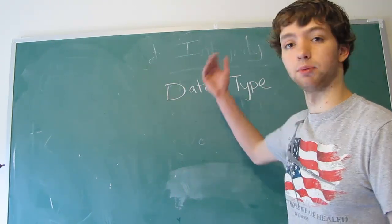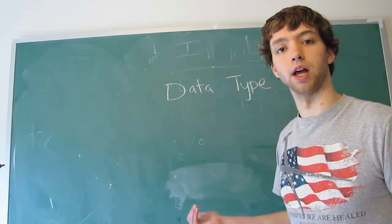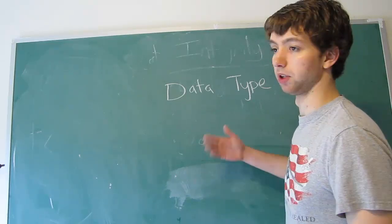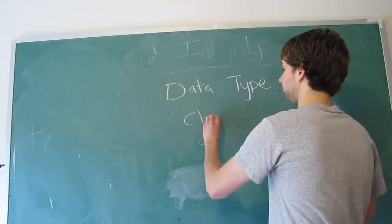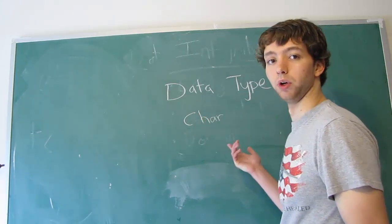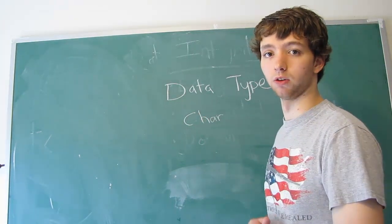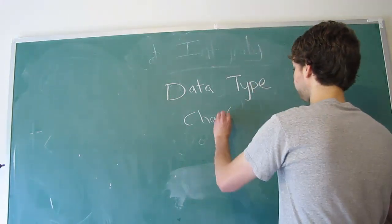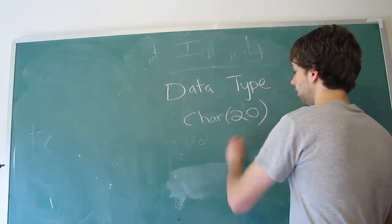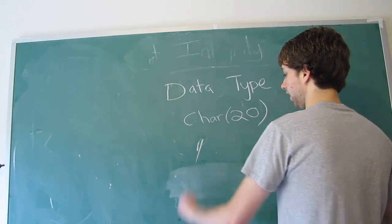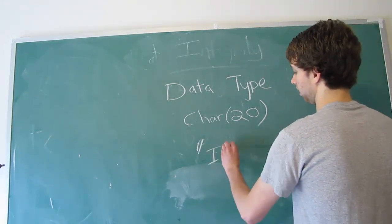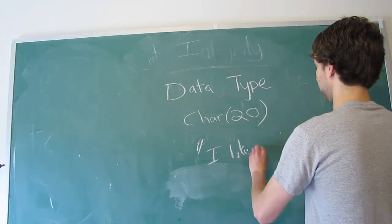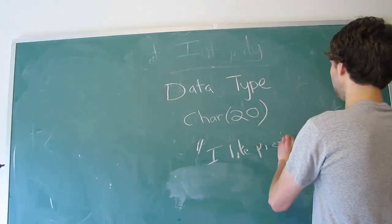A data type is pretty self-explanatory. It's the type of data. In databases, we classify things as generally integer or text or date. So we either have numbers, text, or dates. That's like three general categories, which we'll be talking about more in a future video. But the data type can put limits on what we're allowed to store. For example, we can say, okay, we only want a character column with the maximum of 20 characters. That means we can put a string in the column that says, I like pizza, yeah!